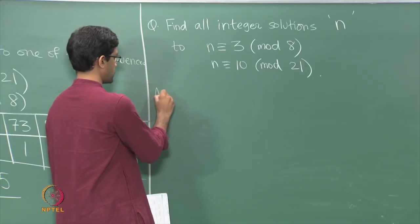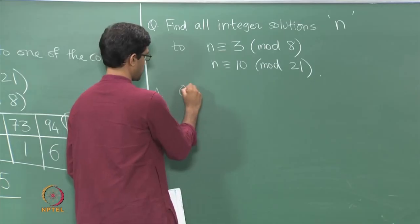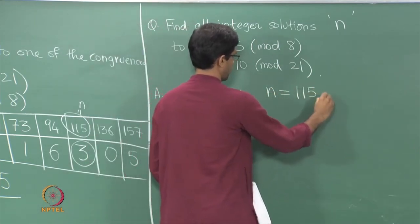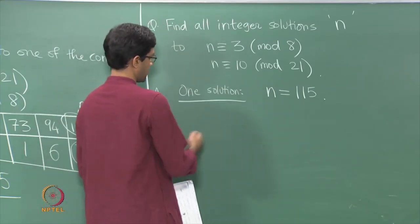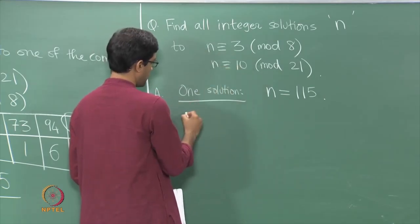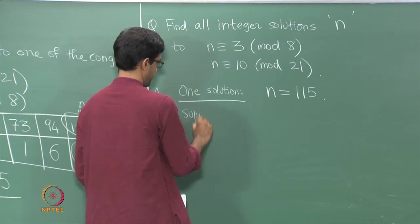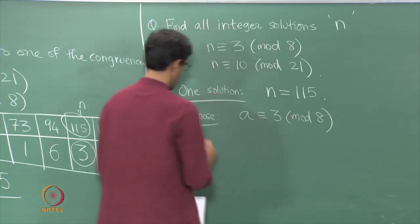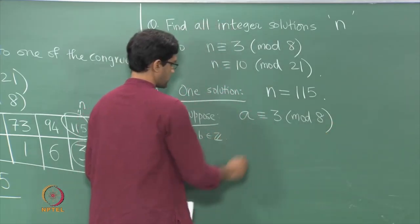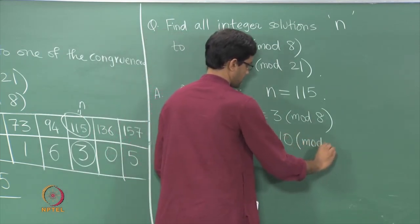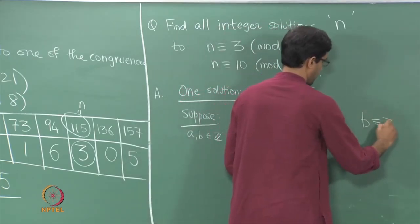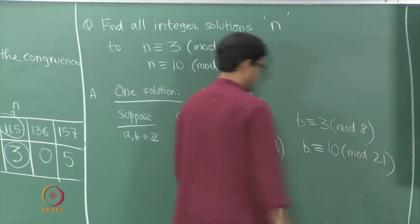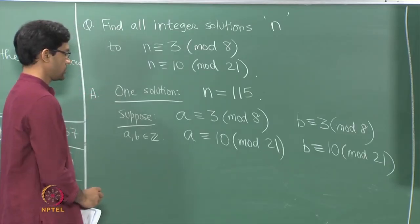Here is the key observation. Suppose A and B are integers both satisfying A congruent to 3 mod 8 and 10 mod 21, and similarly B congruent to 3 mod 8 and 10 mod 21. Let C be A minus B. Since A and B leave the same remainder modulo 8, their difference must be a multiple of 8. Similarly, since they give the same remainder on division by 21, C must also be a multiple of 21.